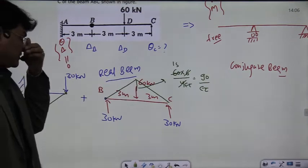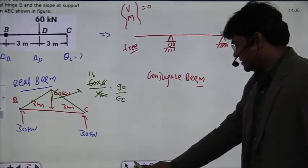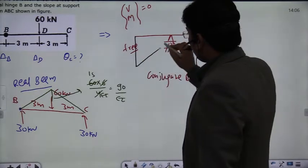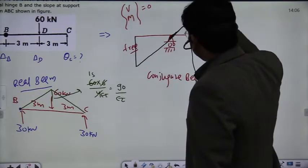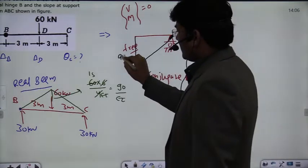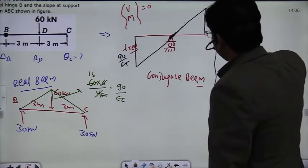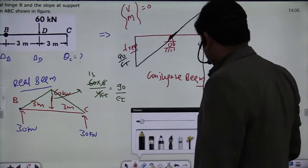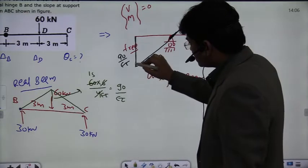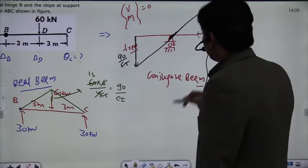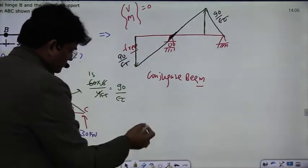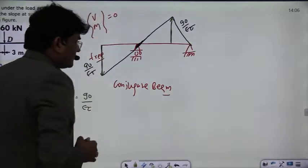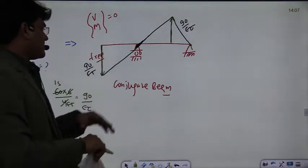So what you have calculated, we will plot it on the conjugate beam. Let's make the M/EI diagram on this beam. In the conjugate beam, the M/EI diagram is the loading. This magnitude will be 90 upon EI, and this magnitude will again be 90 upon EI. Let's take one direction as downward and this direction as upward. In previous classes I have explained about sign directions. Our conjugate beam is ready with this loading.